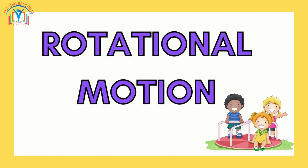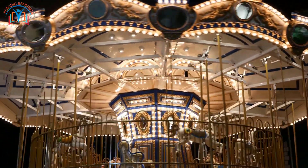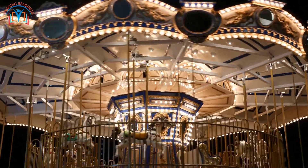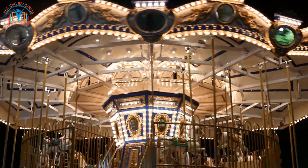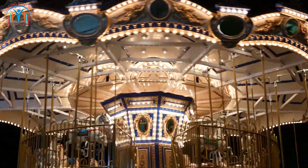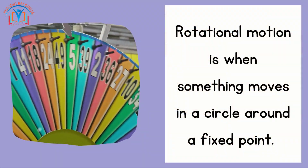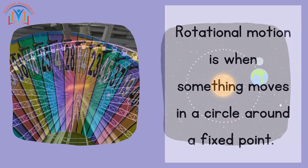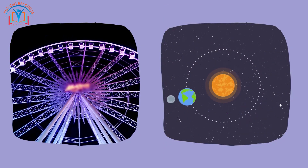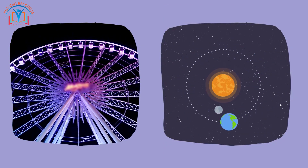Think about a spinning top or a merry-go-round — they go round and round in a circle. That's rotational motion! Rotational motion is when something moves in a circle around a fixed point. Examples include a wheel spinning and a planet orbiting a star.